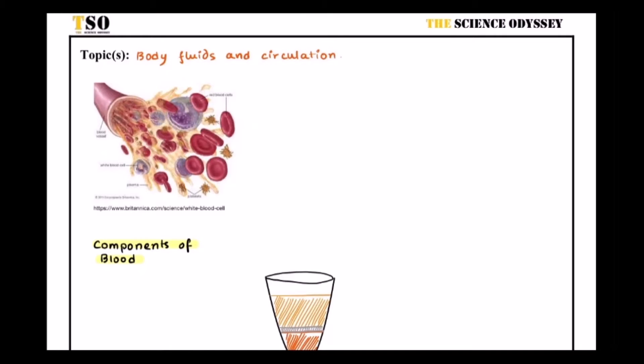Hey guys, we are going to start with body fluids and circulation, which is a part of human physiology in class 11. So what is blood? When we speak about blood, we can say that it is basically a fluid connective tissue. It runs throughout our body. It is a watery substance having components which are essential for survival and transport inside our body.